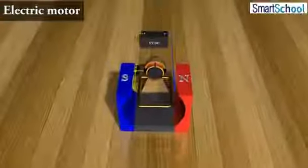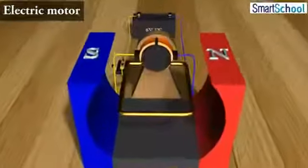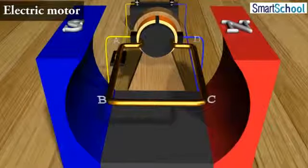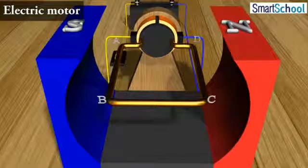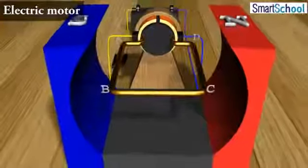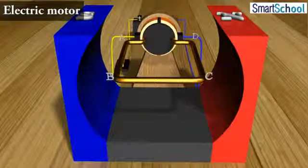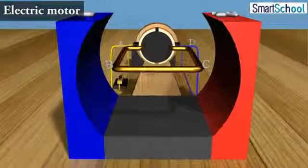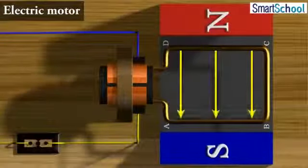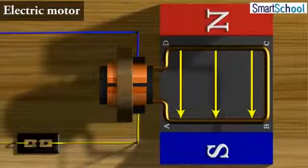An electric motor, as shown here, consists of a rectangular coil ABCD of insulated copper wire. The coil is placed between the two poles of a magnetic field such that the arm AB and CD are perpendicular to the direction of the magnetic field.